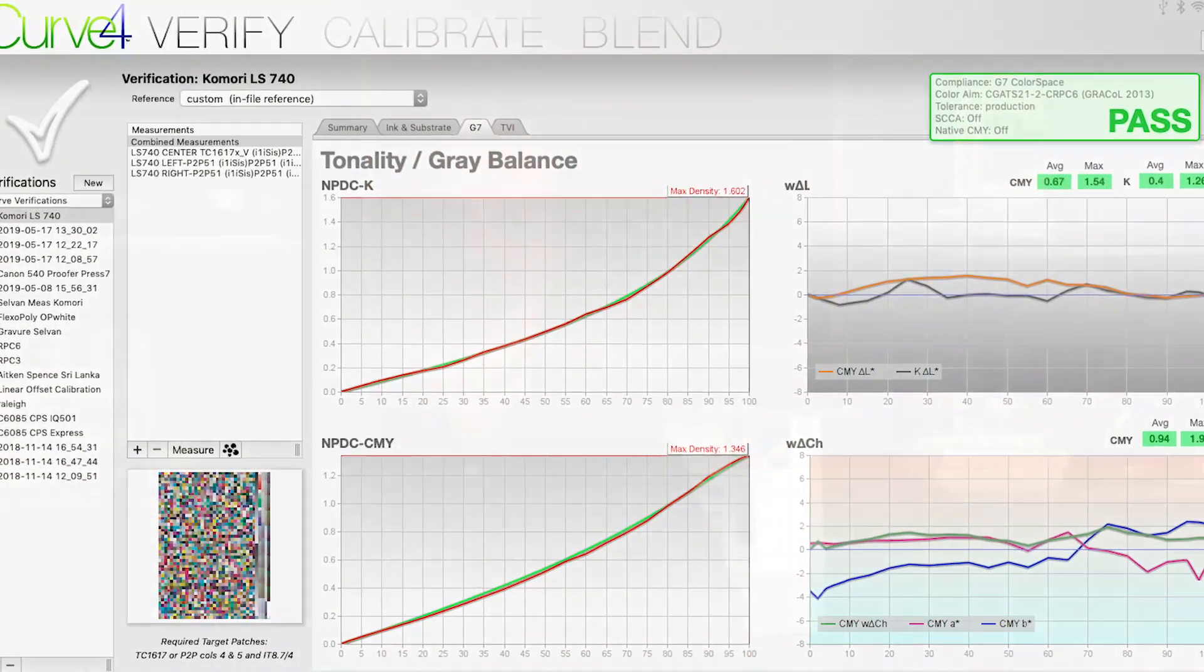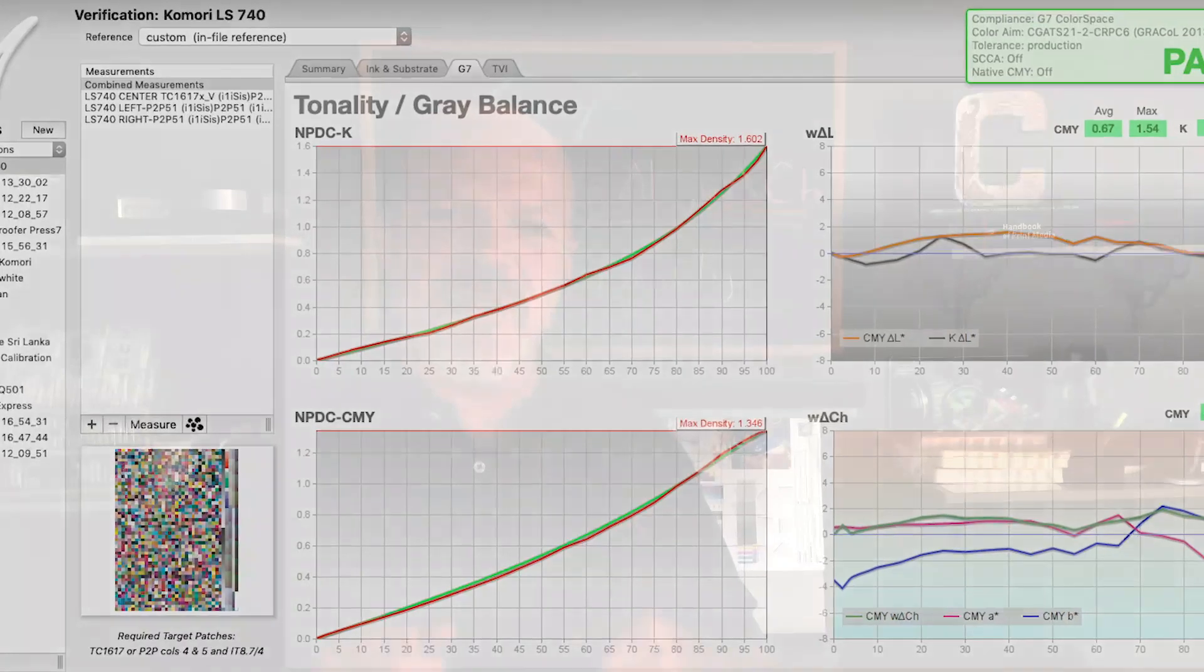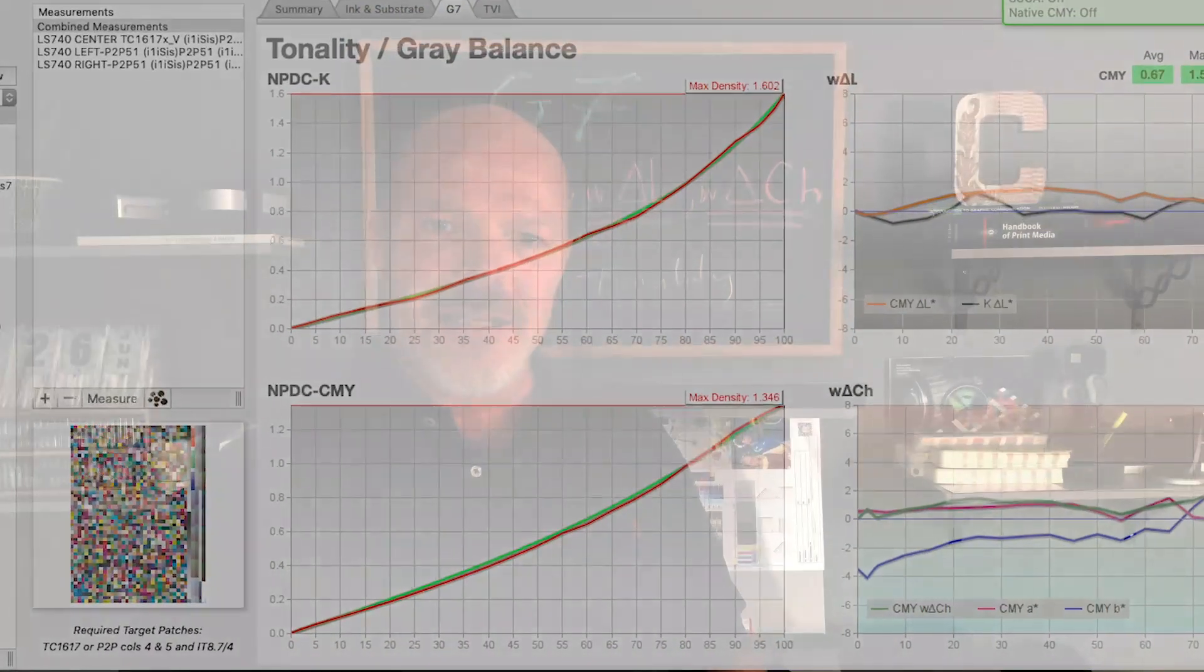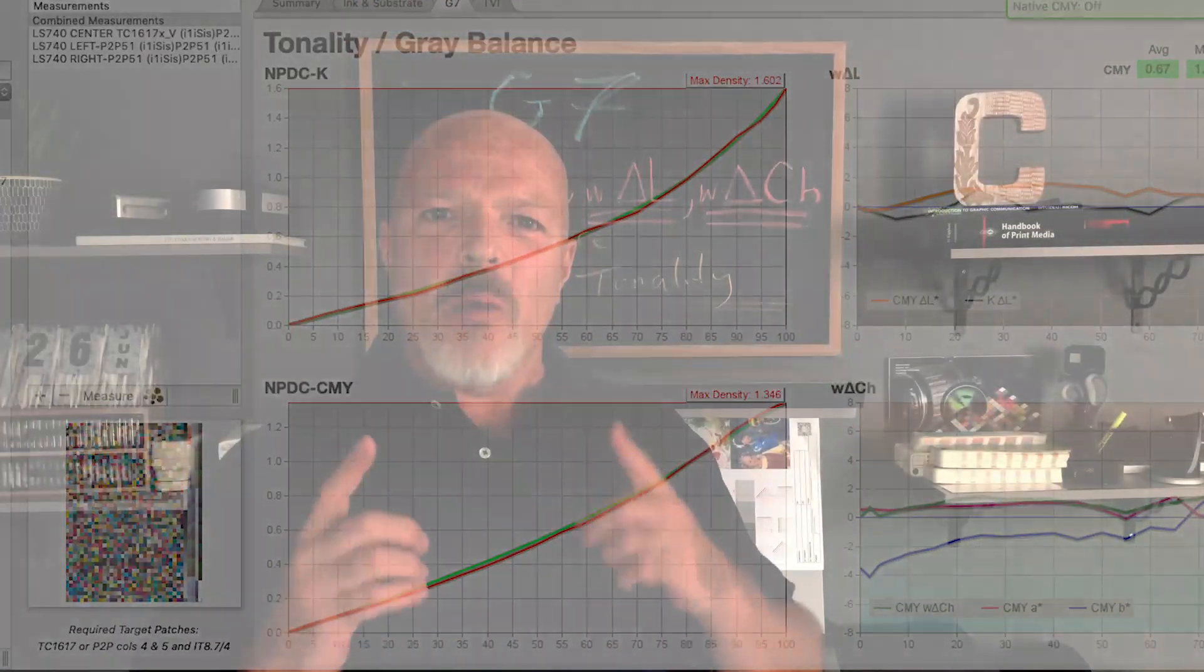These metrics and related tolerances are used to define whether a printer or press is printing good G7 gray balance and tonality.